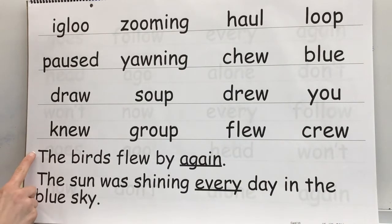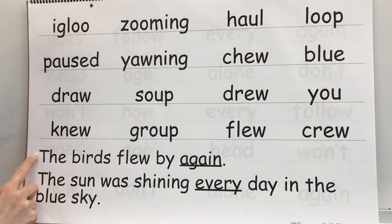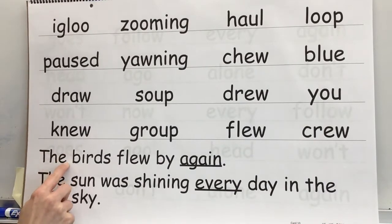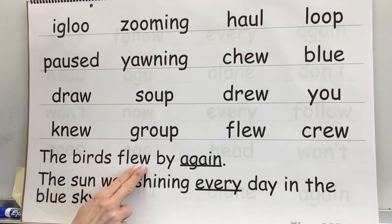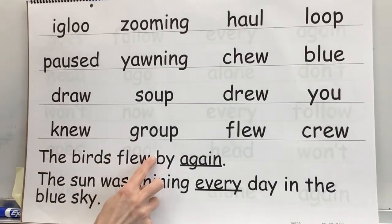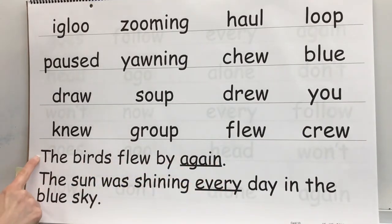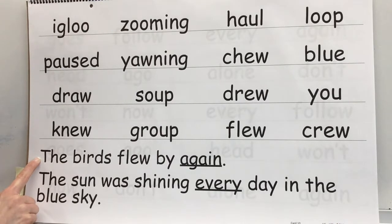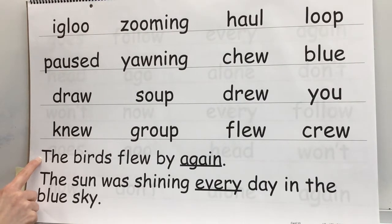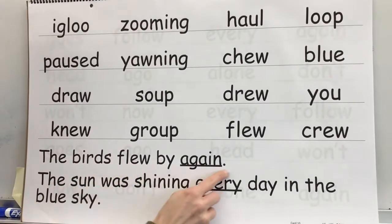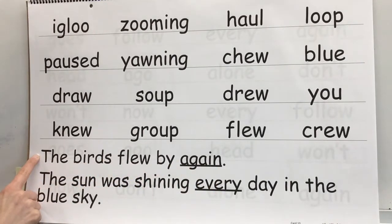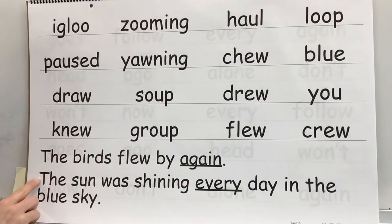Awesome. Sentences. Get ready. Word: the. Word: birds. Sound: ooh. Word: flew. Word: by. Word: again. Ghost that sentence. Get ready. Read: the birds flew by again. Yes, the birds flew by again. Next sentence.